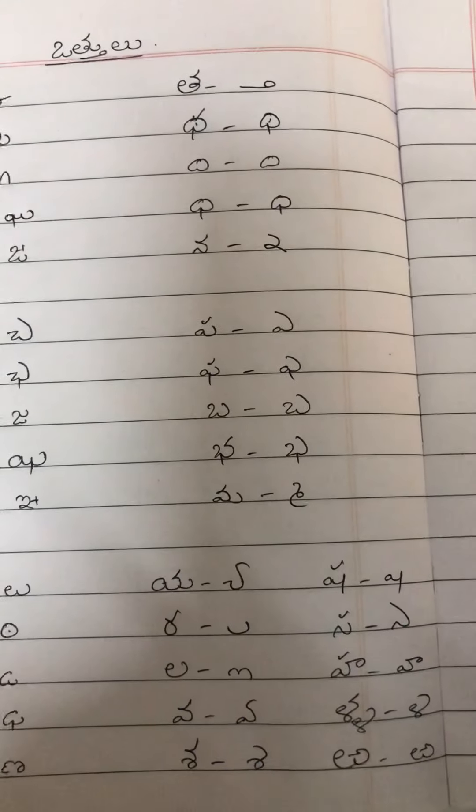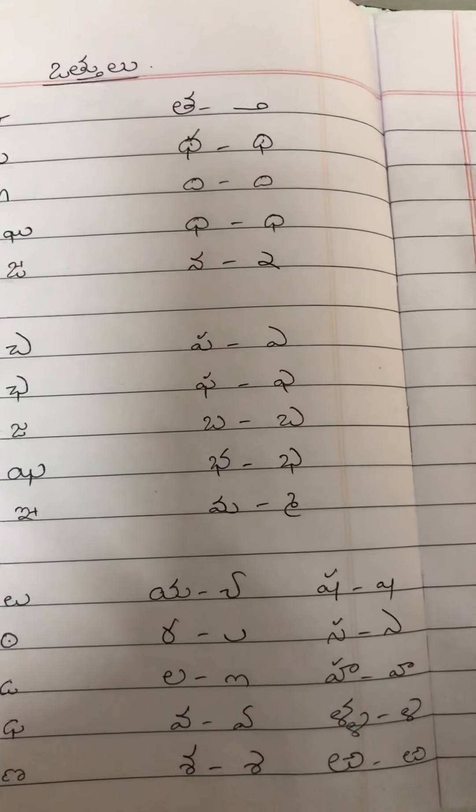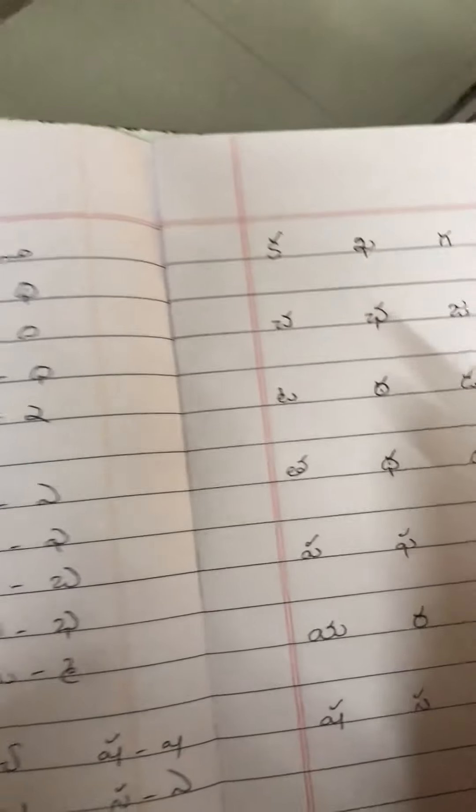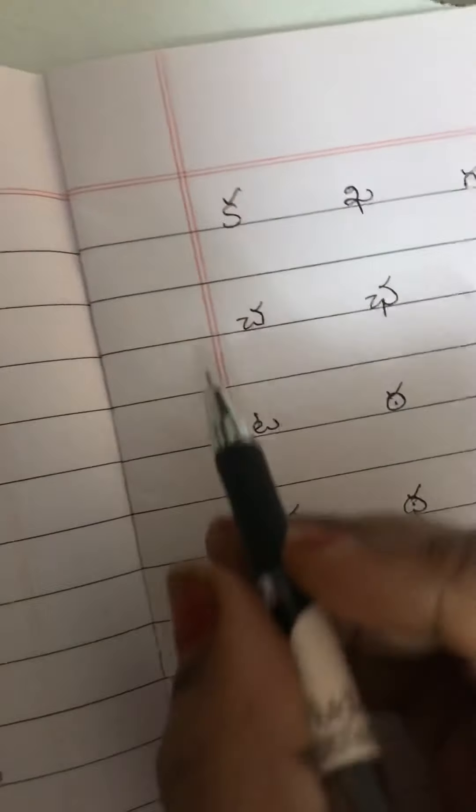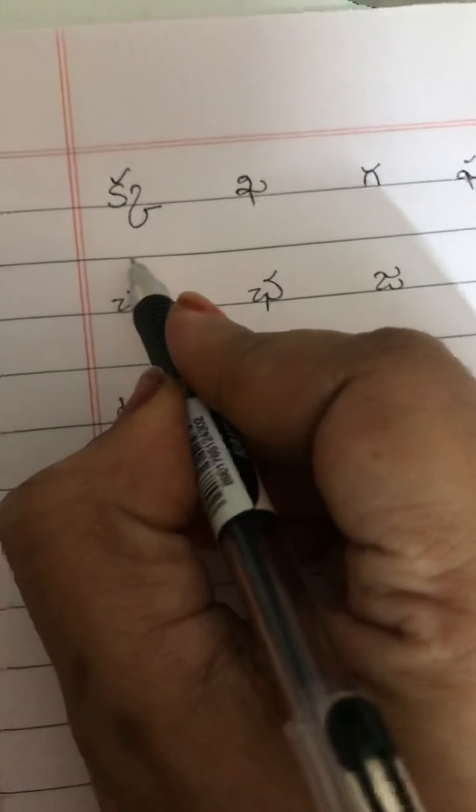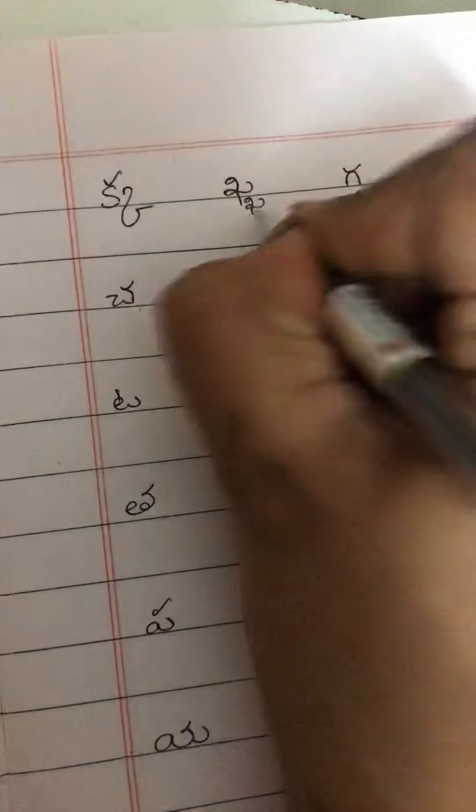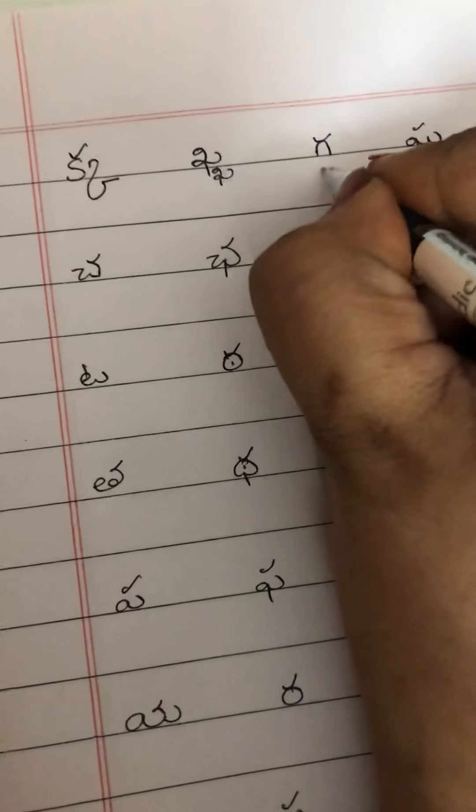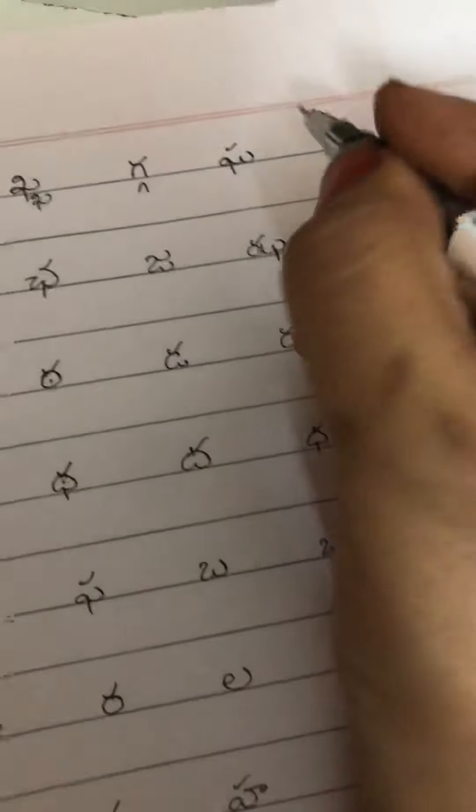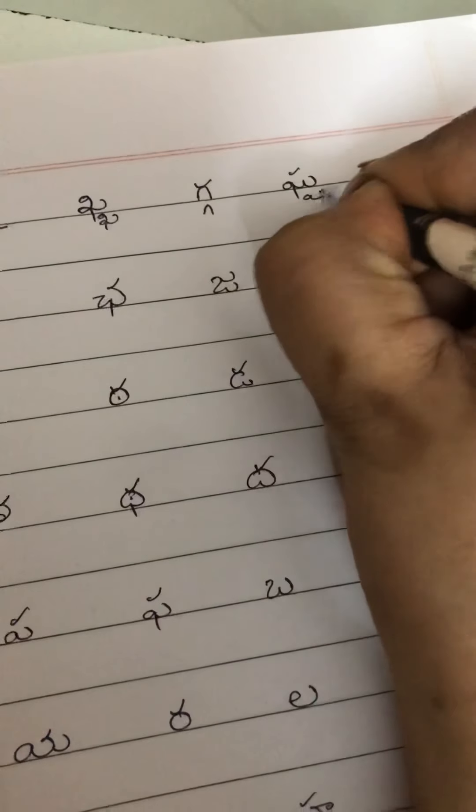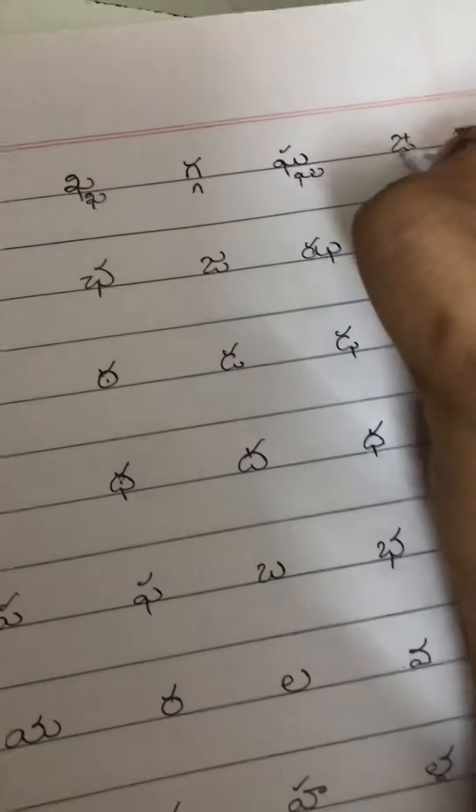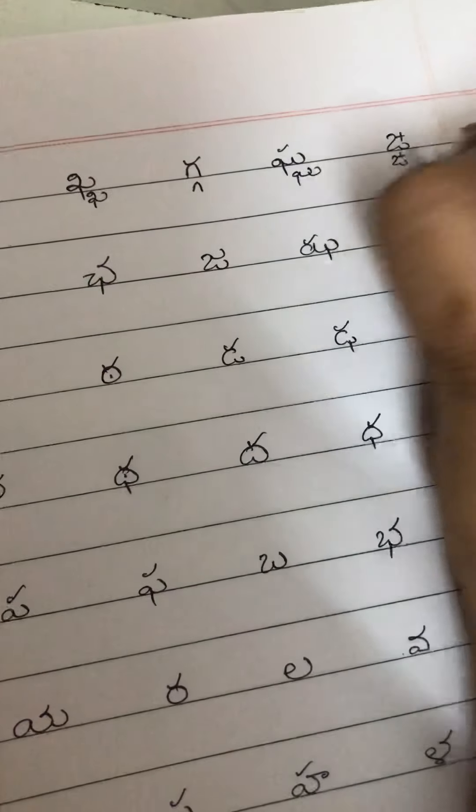Now, how to write the Ottilu next to the letter? That we will see. For example, if you choose Ka. Ka ki kaavattu elarastaru, ilaga, pakkana, next to it. Ka ki kaavattu below the letter. Ka ki kaavattu also is below the letter. And Inya is below the letter.